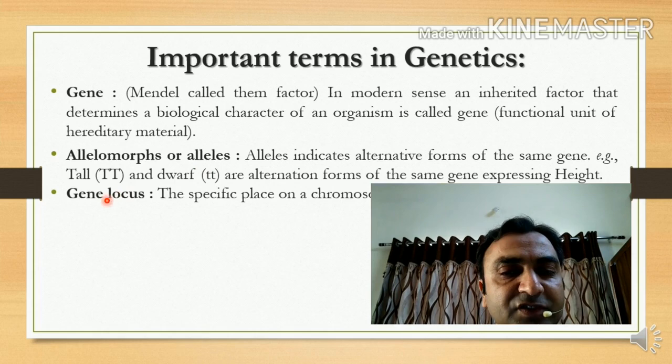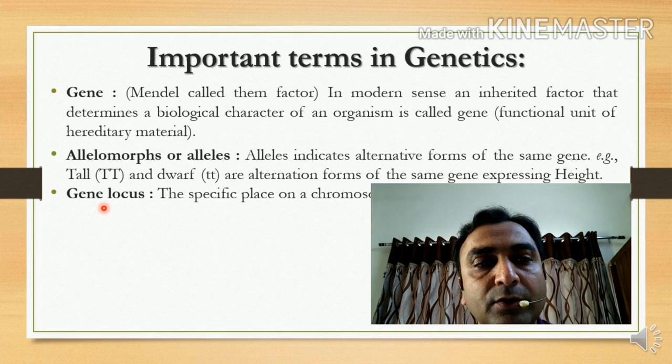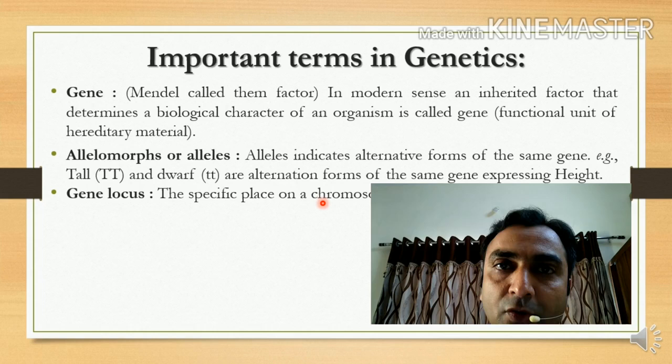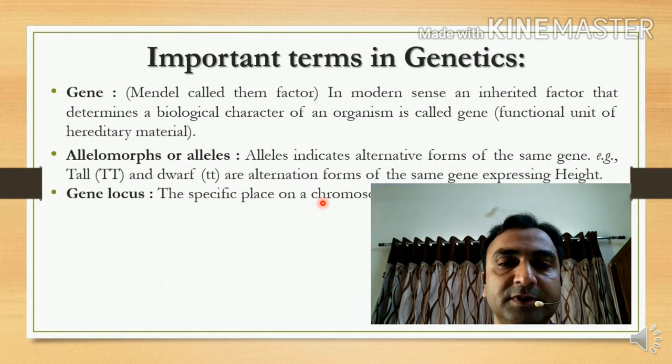Let us talk about gene locus. As we have seen, a gene is located on DNA. The location where the gene is found is called gene locus. It is the specific place on the chromosome. Note that chromosomes are never found inside normal cells — they are found only in dividing cells, as chromosomes are an arrangement of cell division, not regular cell processes. So gene locus is the specific place on the chromosome where a gene is located.